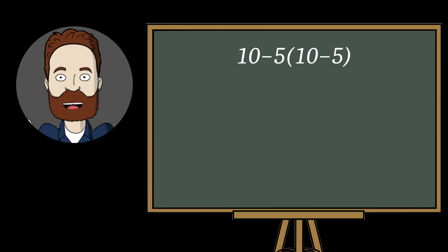In this example, there are three types of operations: subtraction, parentheses, and multiplication. It's also worth noting that the multiplication sign isn't written here, but it's implied. A number before parentheses is always multiplied by what's inside.